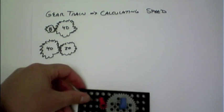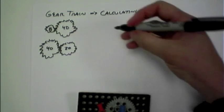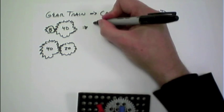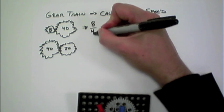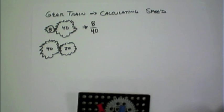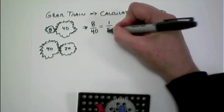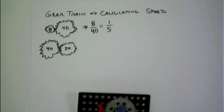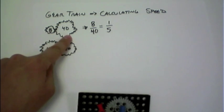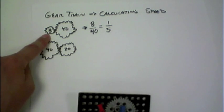And how do we actually go about calculating what that ratio is going to be? Well, we can actually just do this comparison, showing that 8 compared to the 40, and if we reduce that down, that comes out to be a 1 to 5 relationship, which means the 40 will turn one time for the 8 turning five times.